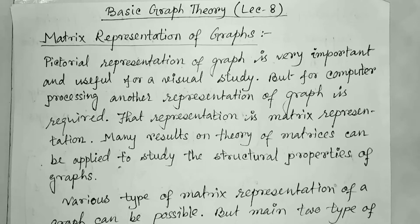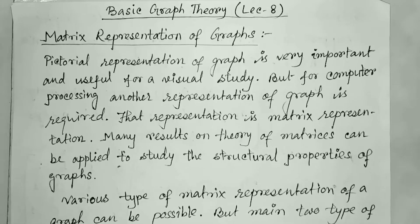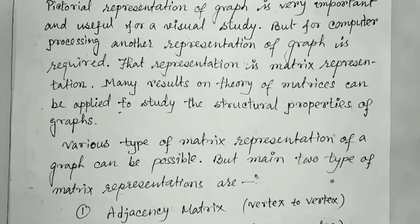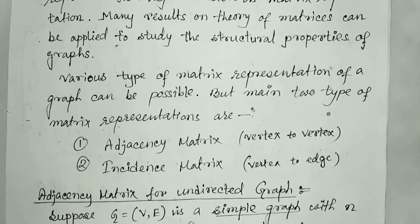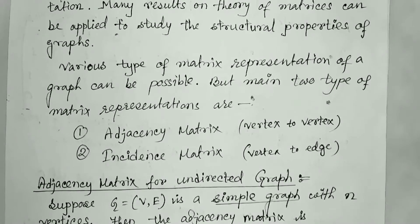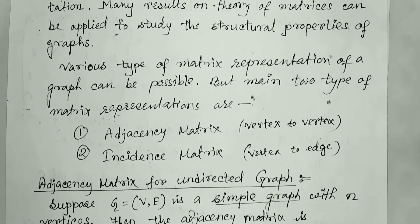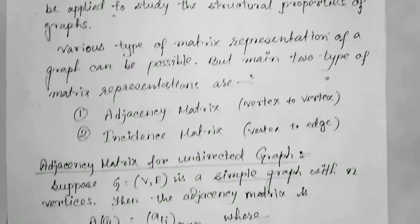Various types of matrix representation of a graph are possible. But the two main types of matrix representations are adjacency matrix and incidence matrix. In a matrix, we know there are two things: one is the row and another one is the column. If we consider both row-wise and column-wise the vertices and draw the matrix, then it is the adjacency matrix.